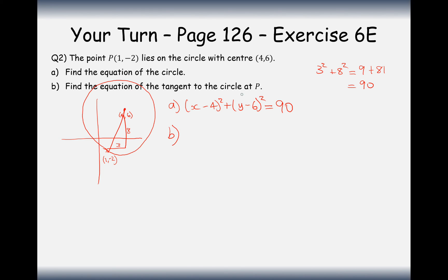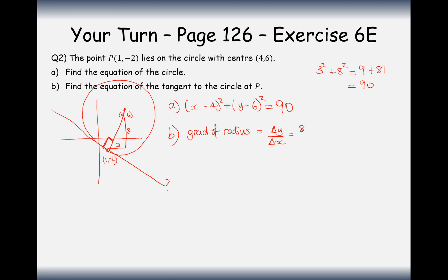Part B asks us to find the equation of the tangent to the circle at point P, which is (1, -2). First, we work out the gradient of the radius. The gradient of the radius equals the difference in y over the difference in x, which is 8/3.